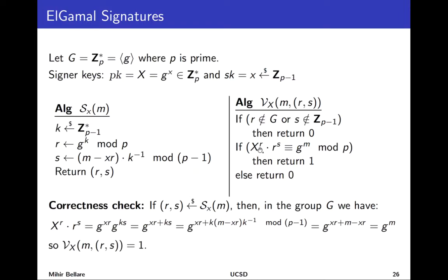This equation says take the public key X and raise it to the power r. That's possible because r is an integer. Then take r and raise it to the power s, multiply those and see if you get back the same as raising the group generator g to the power the message. All of this in the group Z_p^* hence the mod p over here.